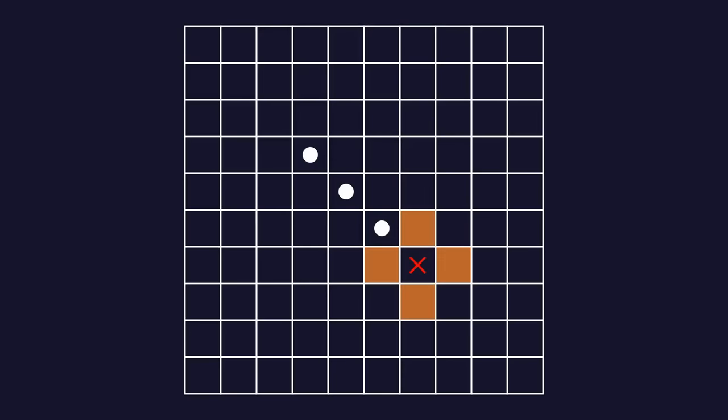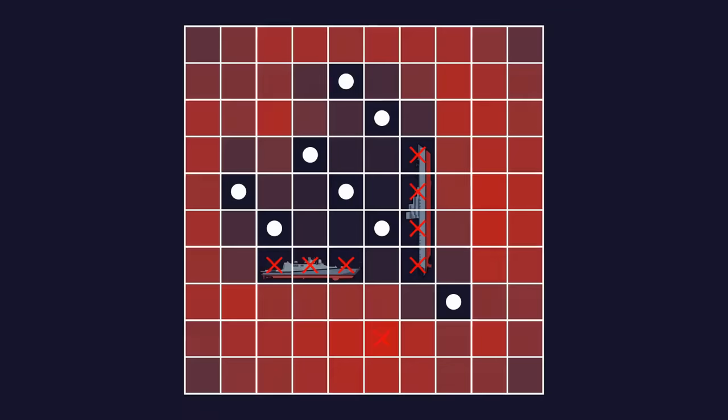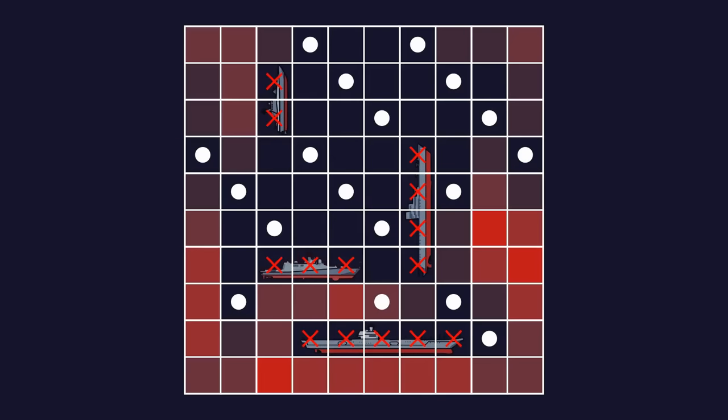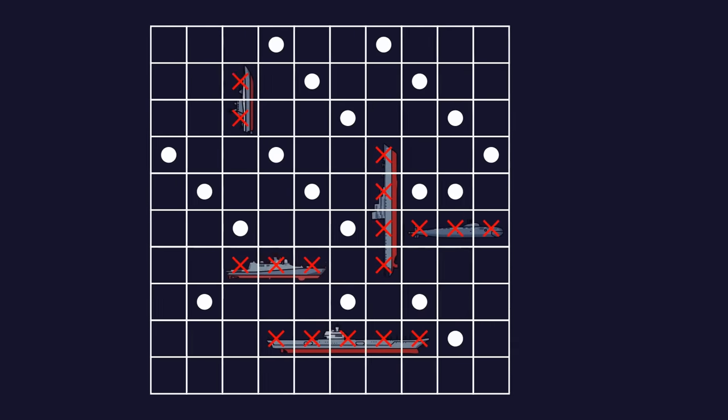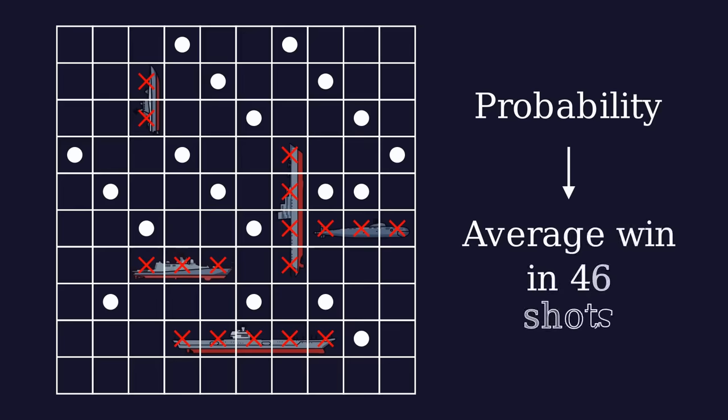When you hit a ship, you shoot around it to sink it. With this strategy, on average, you will sink all your opponent's ships in only around 46 shots.